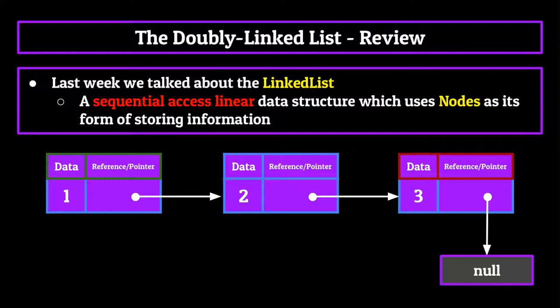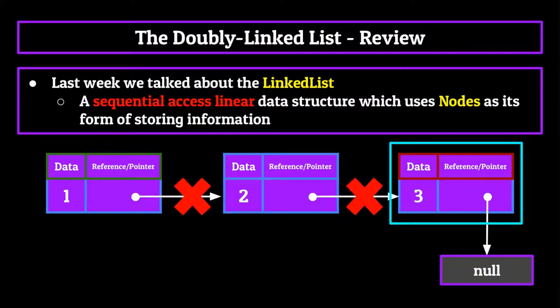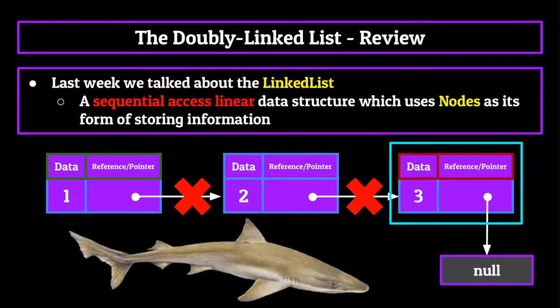This does come with one big drawback, however. With a normal linked list, we can only ever go forward with our pointers, never backwards. From the computer's eyes, once we follow a pointer to a certain node, there's no way to undo or go back to the previous one. Much like a shark, we can and will only ever go forward with regular linked lists.